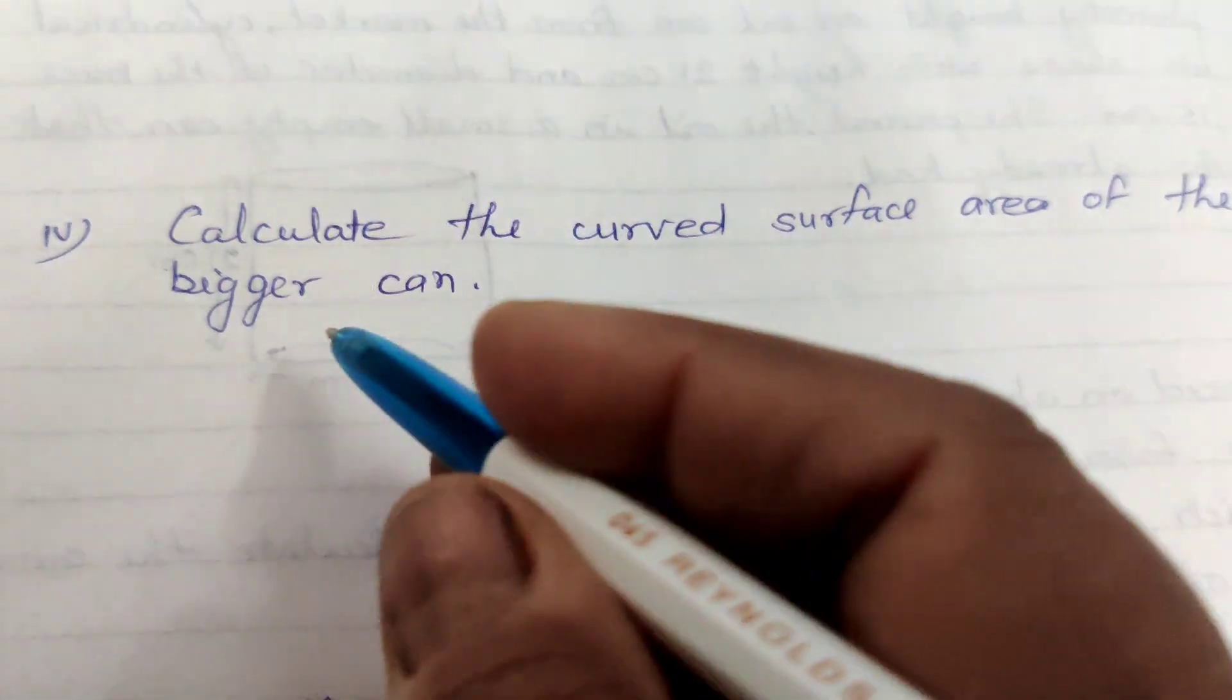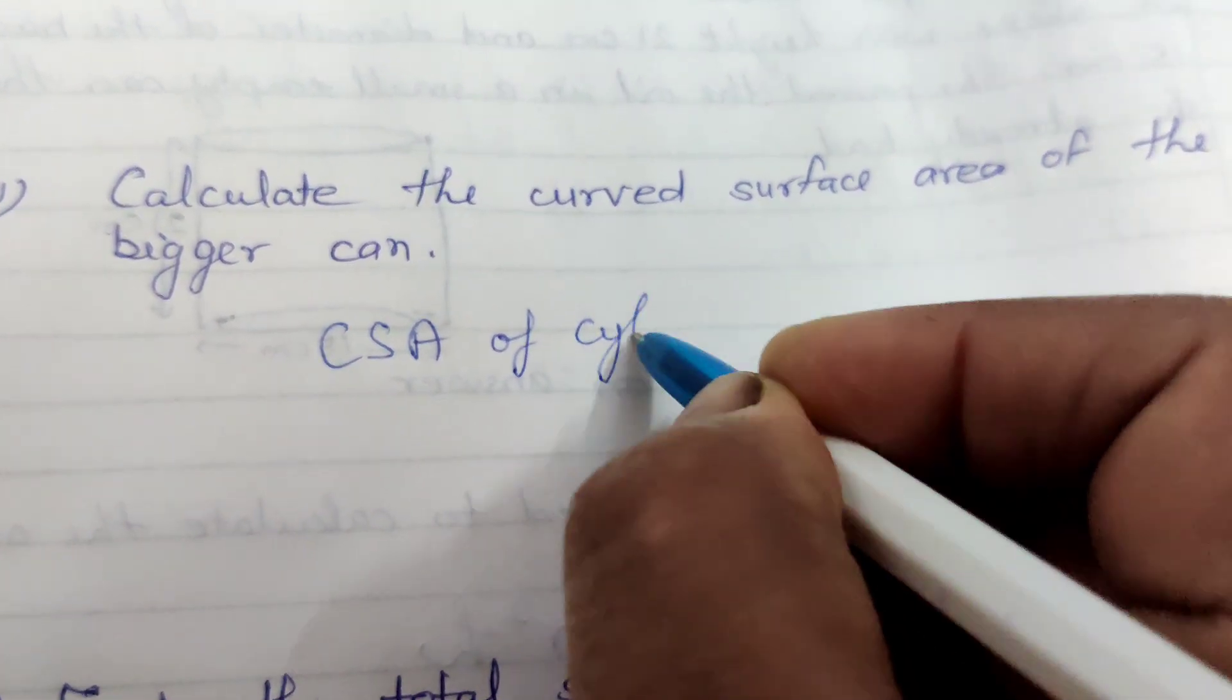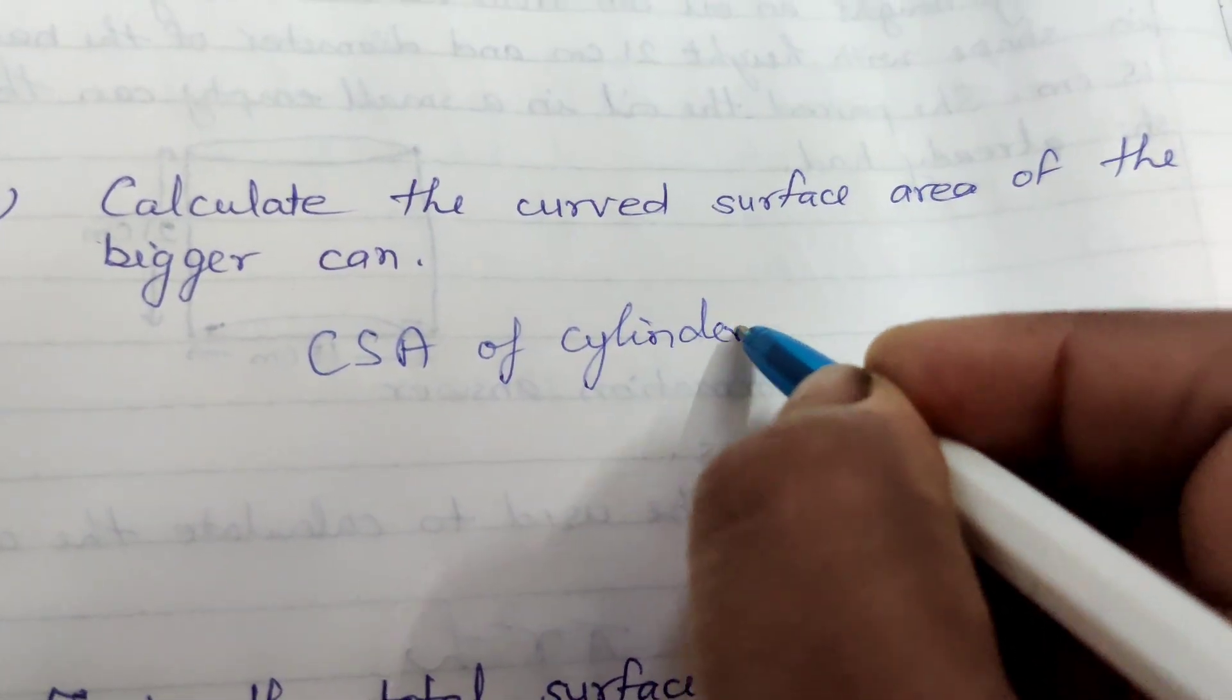Calculate the curved surface area of the bigger can. The formula of curved surface area of cylinder is 2 pi RH.